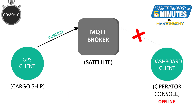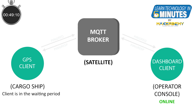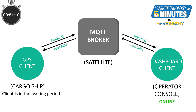Let's say that the system running the client dashboard application has crashed and it comes back online after 30 minutes, by when the GPS publisher client has already published a new location and is in the waiting period of 20 minutes. In this case, the client dashboard application will be kept in the dark about any status of the ship, as no messages are being published in the interim period.